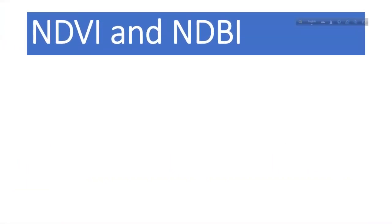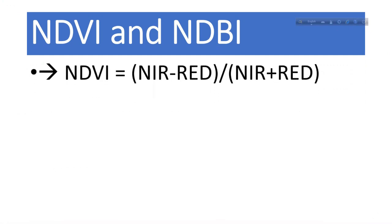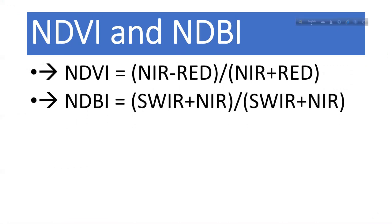I will discuss NDVI and NDBI. NDVI means Normalized Difference Vegetation Index and NDBI means Normalized Difference Build-Up Index. I will calculate these using their formulas, which you can see here.